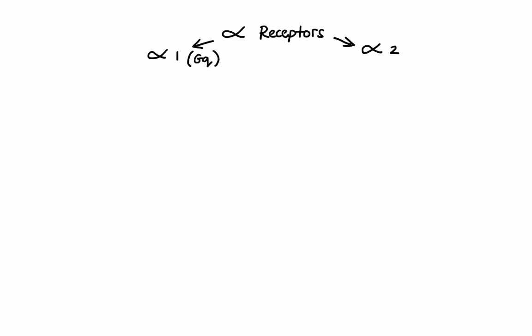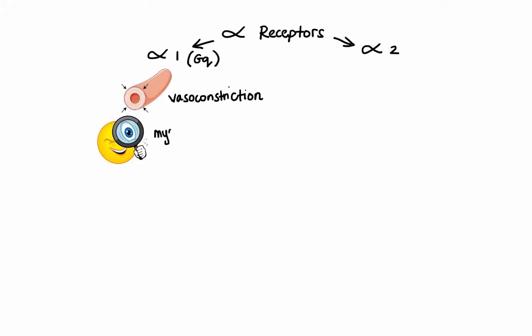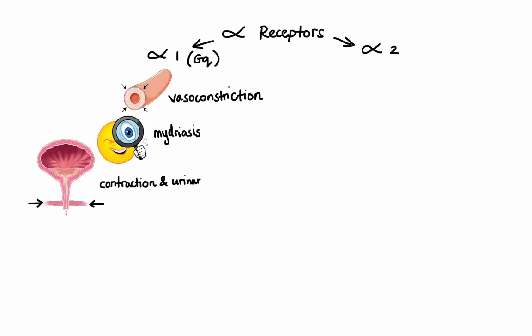Alpha-1 receptors are mainly located on vascular smooth muscle throughout the whole body, and when activated, they lead to vasoconstriction. They are also located on the dilator muscle of the iris, and when activated, they lead to mydriasis, which is dilation of the pupil. They are also located on urinary sphincters, and when activated, they lead to contraction and urinary retention. Alpha-1 receptors are also located in the liver, and when activated there, they lead to glycogenolysis, which is breakdown of glycogen to glucose.